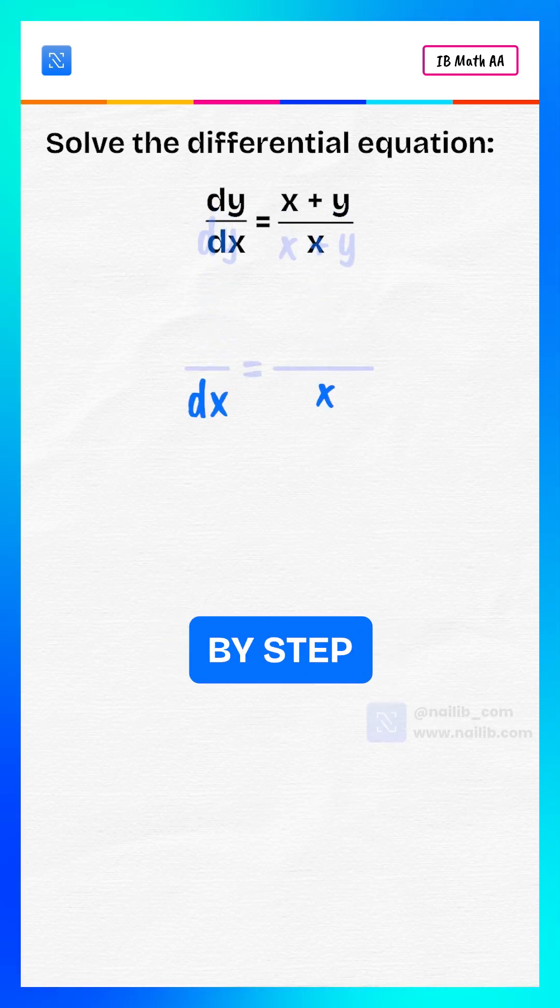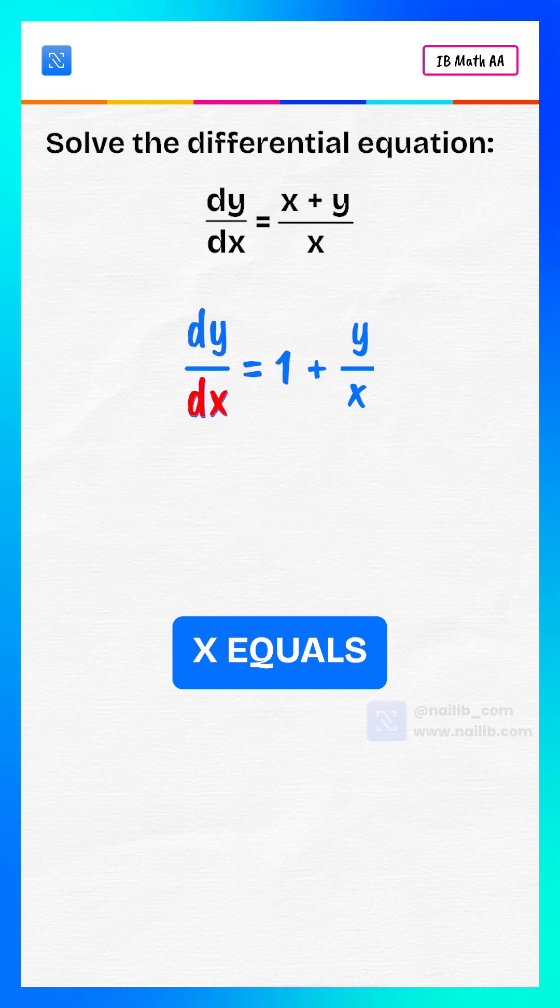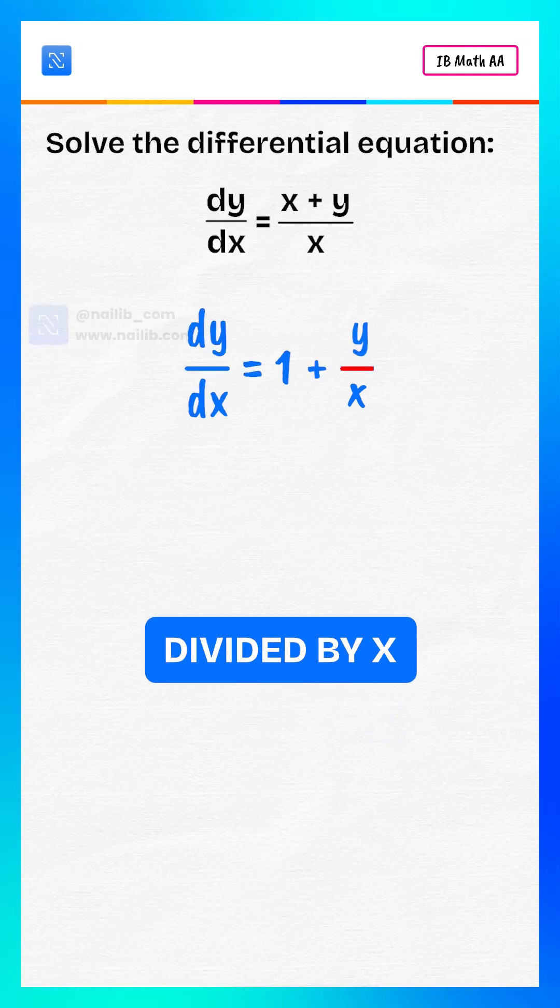Let's solve step by step. Let's simplify that. This becomes dy/dx equals 1 plus y divided by x.